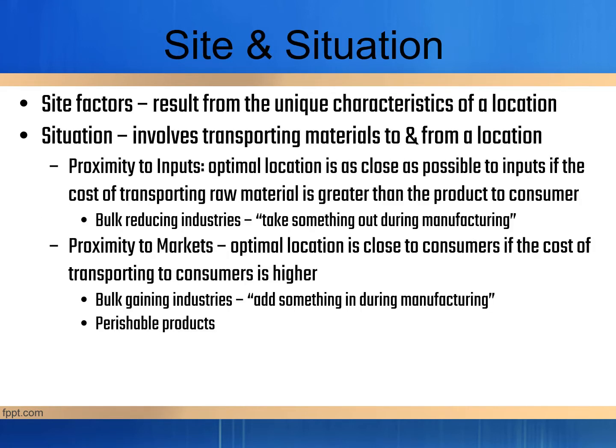Site factors result from the unique characteristics of a location. Situation involves transporting materials to and from a location — the proximity to inputs. The optimal location is as close as possible to inputs if the cost of transporting raw materials is greater than the cost of transporting the product to the consumer. Bulk reducing industries mean that you take something out during manufacturing, so it's lightest at the end, which means you would want to produce that close to the raw material.